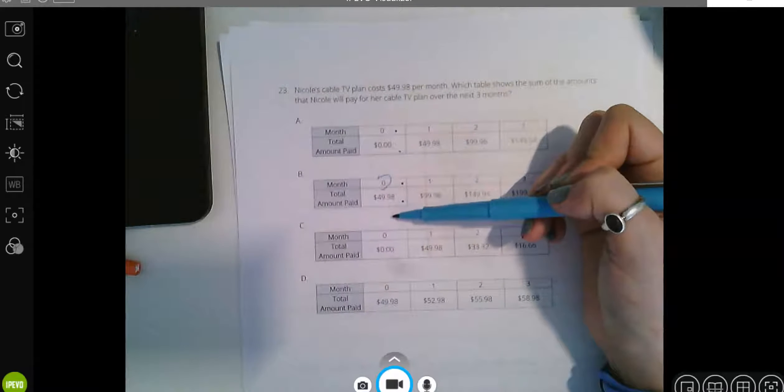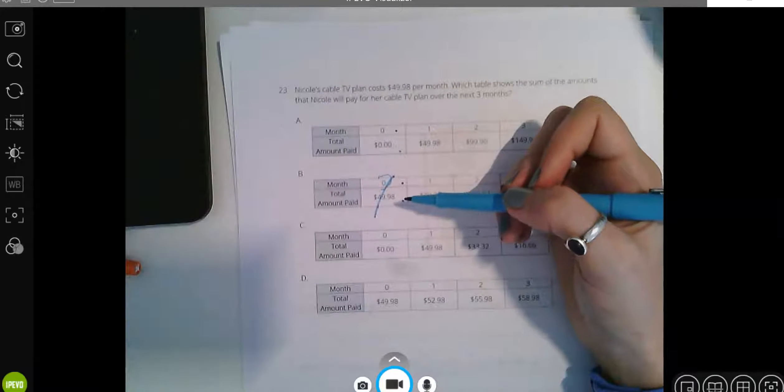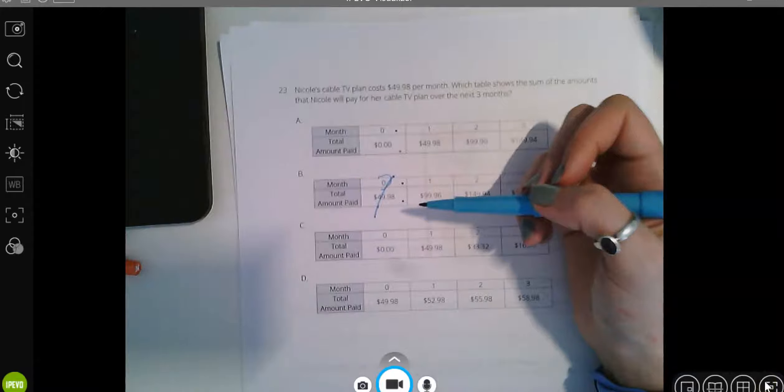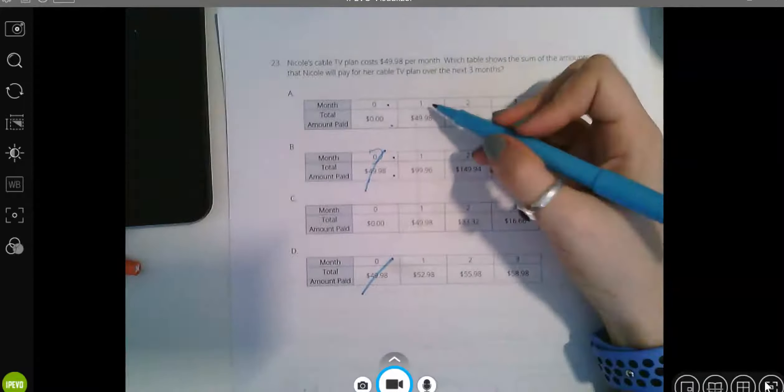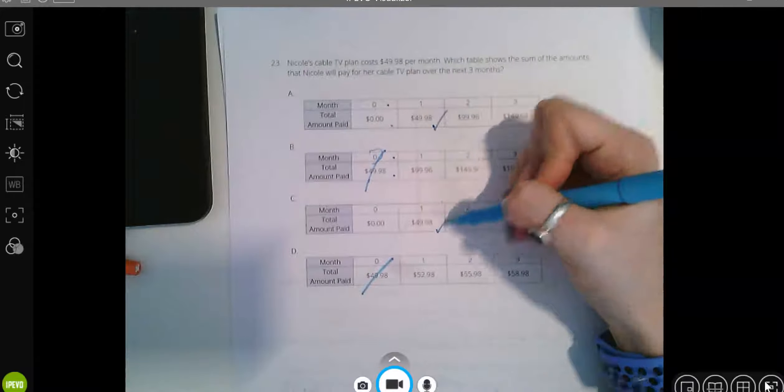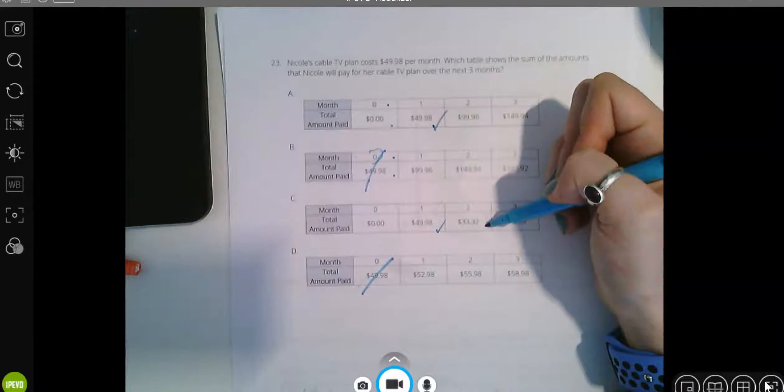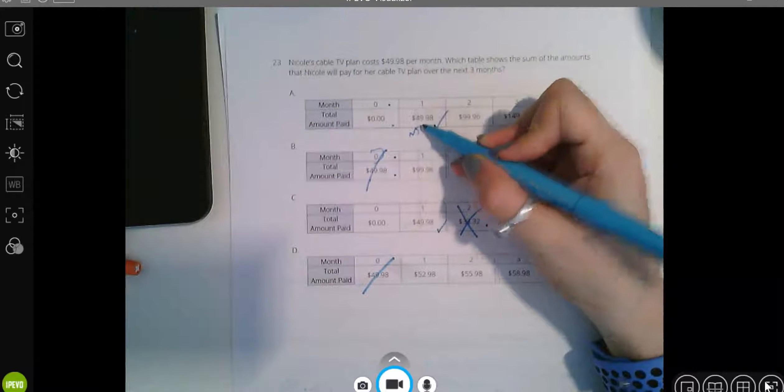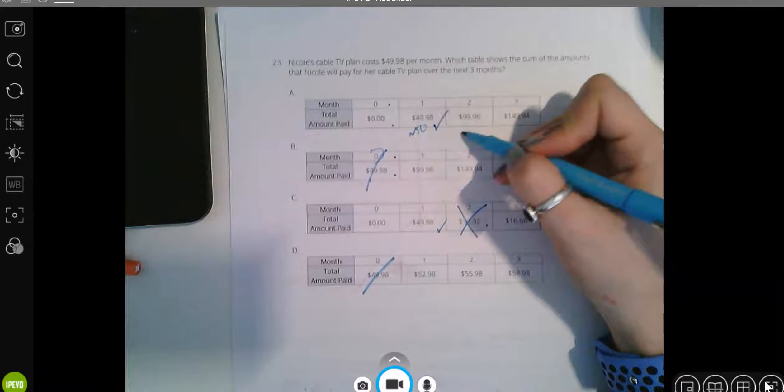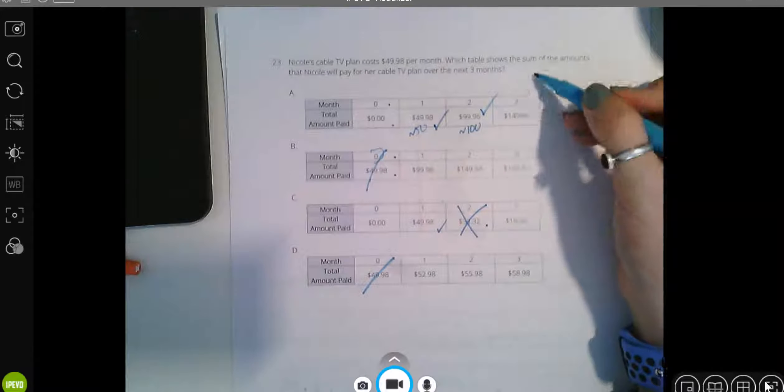Zero months she hasn't paid $49 yet. This would be like if she had a startup like a signup fee too. That's not right. These two are wrong. So automatically I'm gonna choose one of those two choices. In one month $49.98. In two months it should not be less than what she paid originally. It should be twice as much because it's the sum. So in two months she's paid for the one month and then the second month together. That should be pretty close to $100. $99.96. Pretty close to $100. I don't even need to check this one because this is the only one that's still a viable option. So my answer should be A.